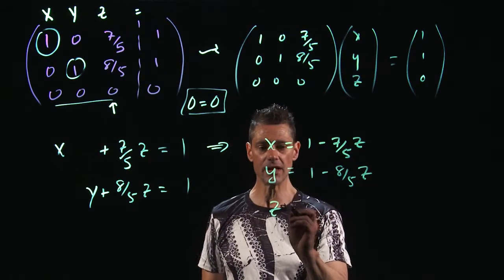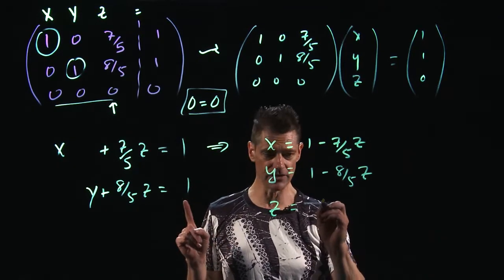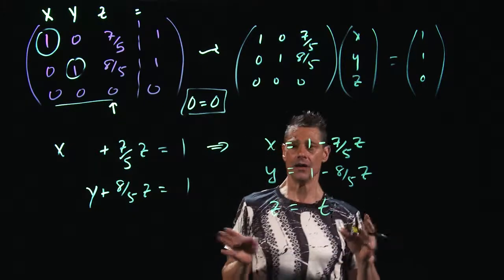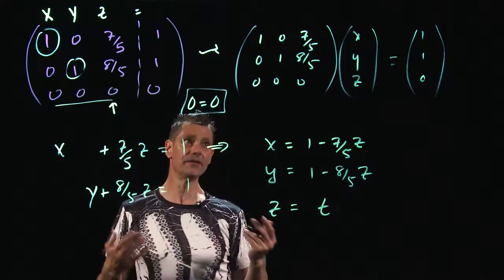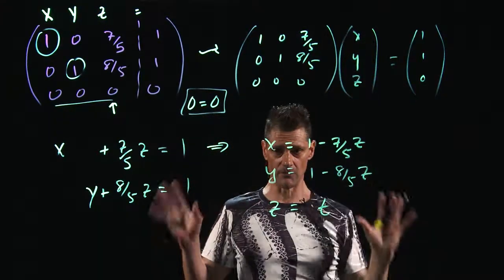And what we do is we call z a parameter. And usually what you do is if you only have one parameter, you just call it t. Because, typically speaking, when you're using parameters, things are varying with time. So, once again, this is a three-dimensional column vector. And we're going to talk more about that in just a minute.